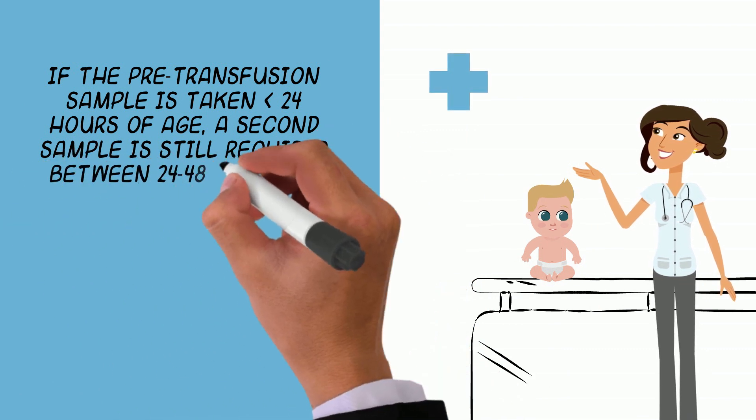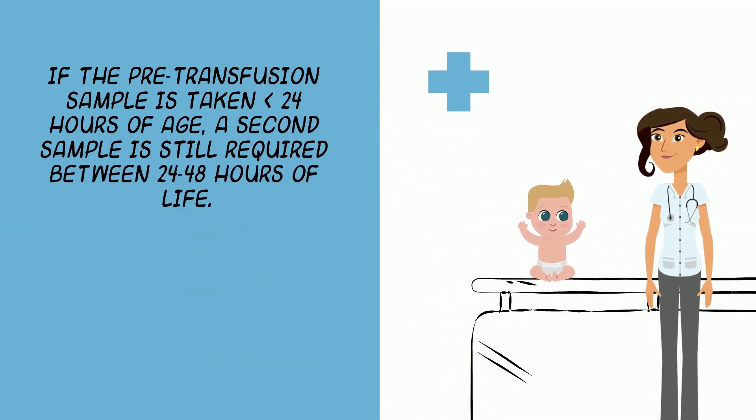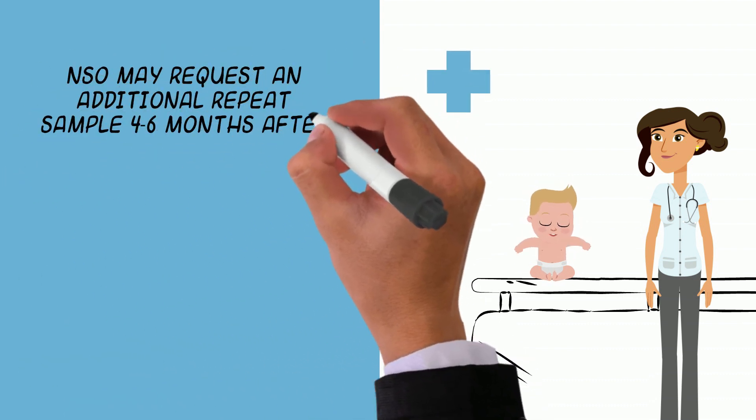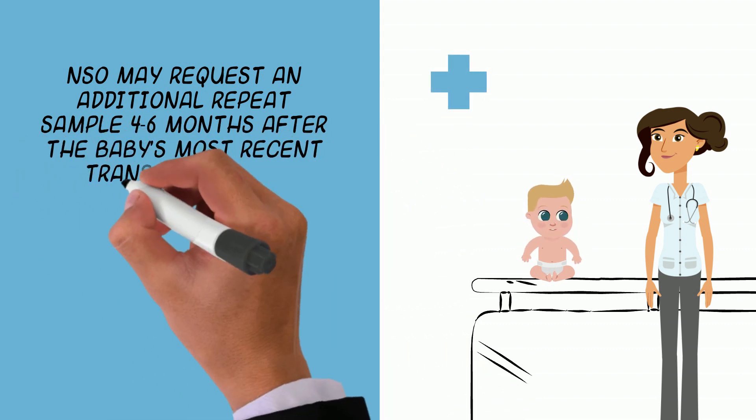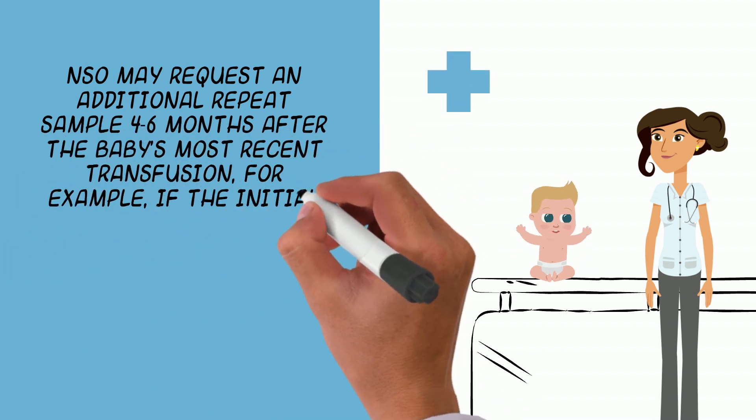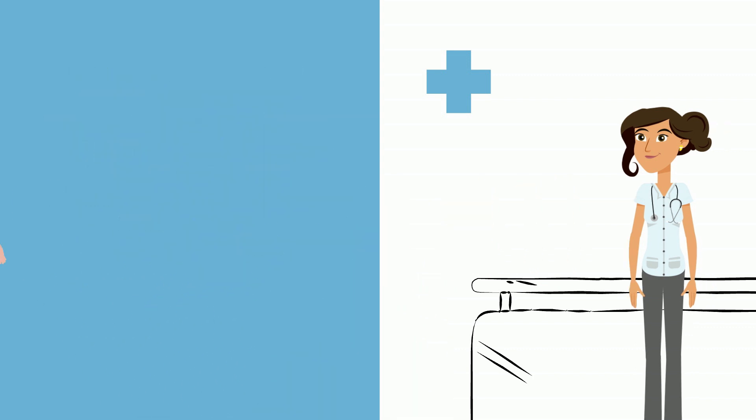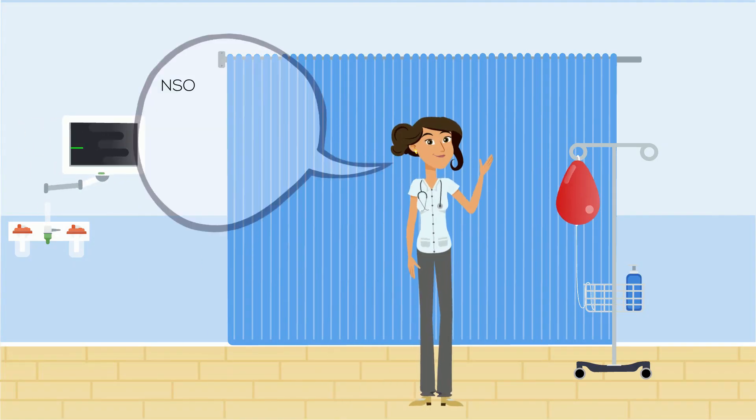NSO may request an additional repeat sample four to six months after the baby's most recent transfusion, for example, if the initial sample was unsatisfactory. NSO understands that it is not always possible to obtain a newborn screening sample prior to a transfusion.